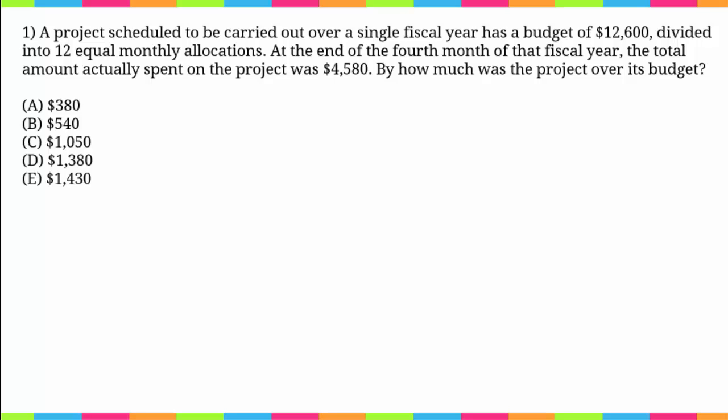This question says: a project scheduled to be carried out over a single fiscal year has a budget of twelve thousand six hundred, divided into twelve equal monthly allocations. At the end of the fourth month of that fiscal year, the total amount actually spent on the project was four thousand five hundred and eighty dollars. By how much was the project over its budget?